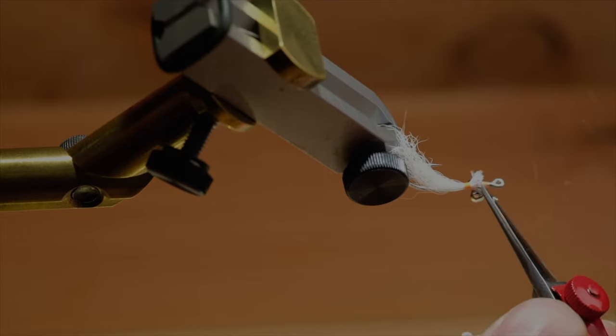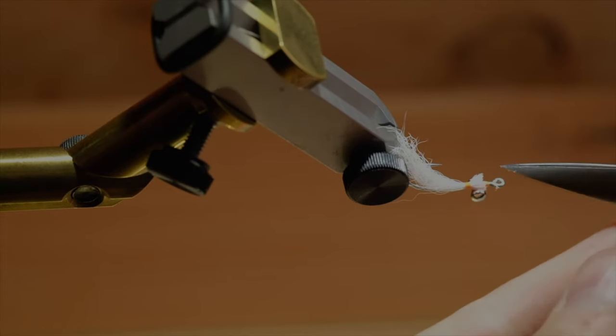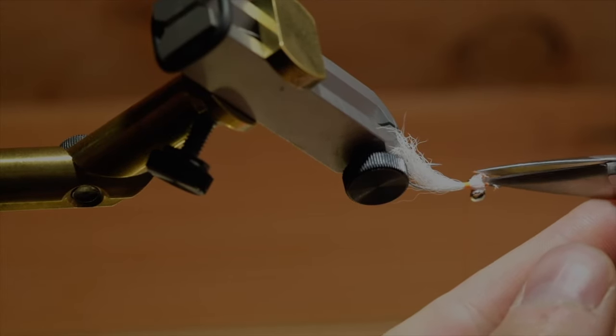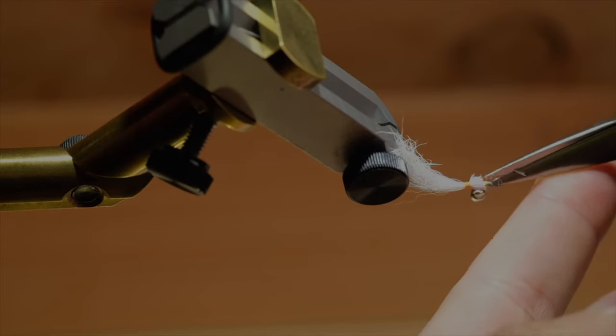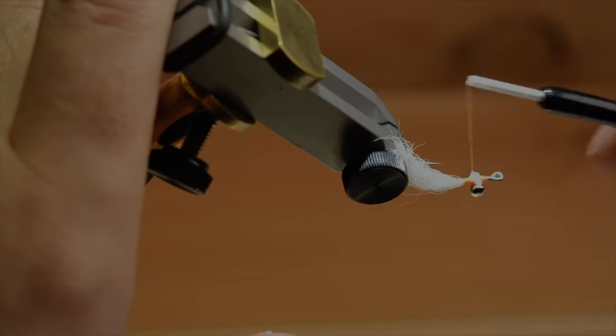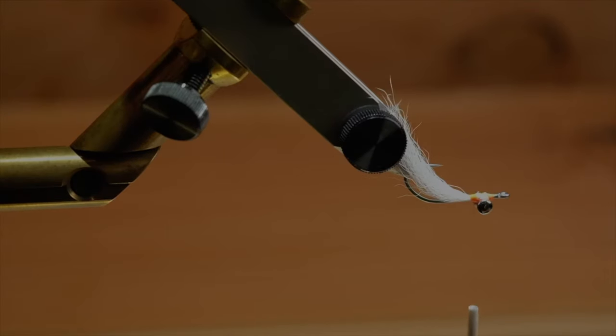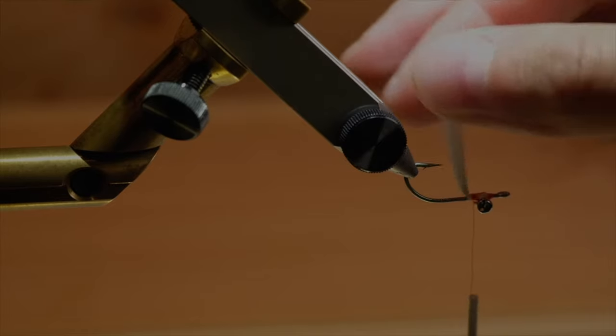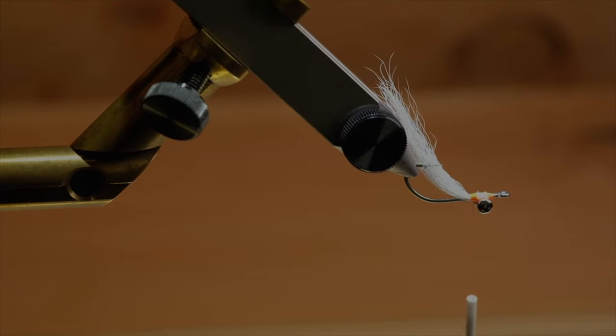Pull down on it. Now once I've done that, I'll trim those butt ends a little bit. And again, a little bit of superglue. Now you don't have to do this, but you could add a few strands of crystal flash in the hair. I don't.